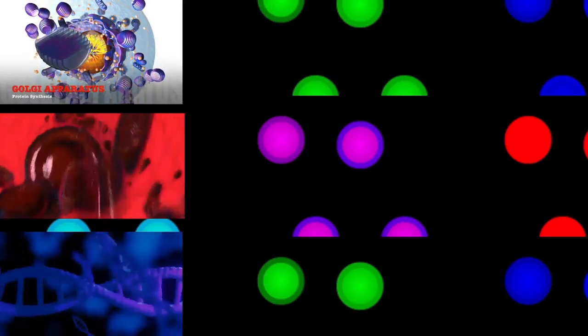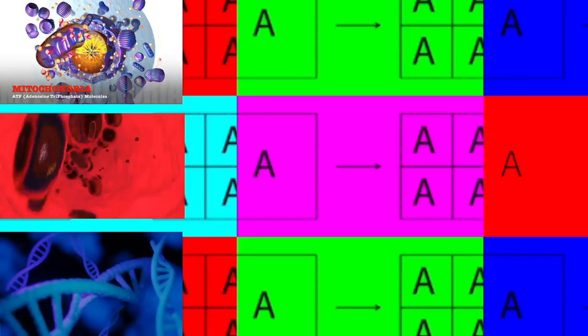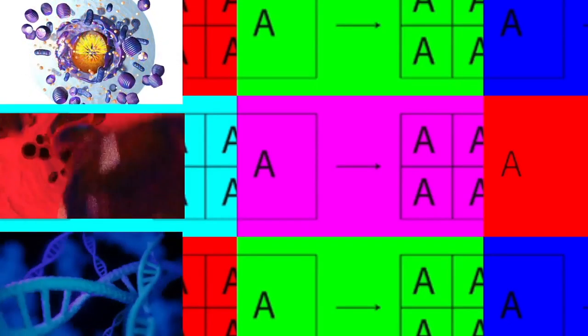While typically being unicellular, some prokaryotes such as cyanobacteria may form large colonies. Others, such as myxobacteria, have multicellular stages in their life cycles. Prokaryotes are asexual, reproducing without fusion of gametes, although horizontal gene transfer also takes place.